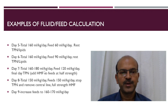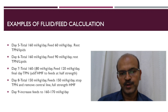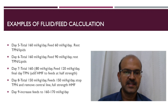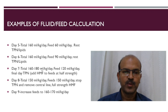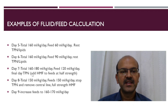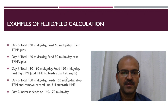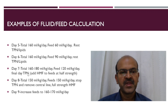By day 7, we have reached 160 to 180 ml. If weight gain is not good, or sodium needs additional fluid, or if there are no signs of PDA, we can go up to 180 ml. The feed goes up to 120 ml. We have started adding HMF at half strength to the feeds, and this will be the final day of TPN.